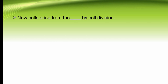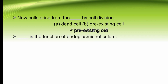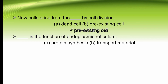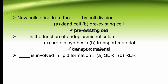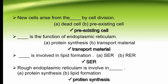New cells arise from the dash by cell division — dead cell or free existing cell. The right option is B. New cells arise from free existing cells by cell division. Dash is the function of endoplasmic reticulum — protein synthesis or transport material. Dash is involved in lipid formation — smooth endoplasmic reticulum or rough endoplasmic reticulum. Smooth endoplasmic reticulum is involved in lipid formation. Rough endoplasmic reticulum is involved in dash — protein synthesis or lipid formation. Rough endoplasmic reticulum is involved in protein synthesis. The right option is A.